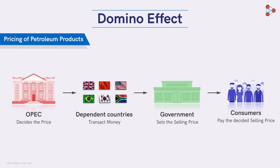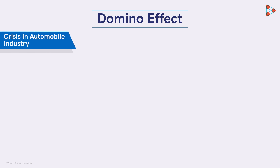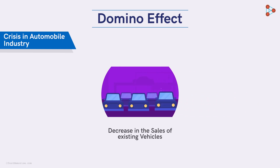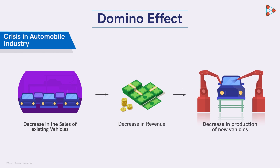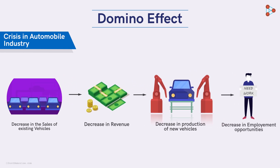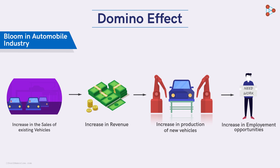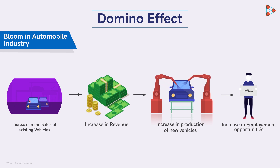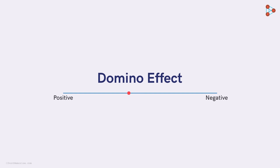Let's consider another example: an automobile industry suffering from a crisis. The decline in the sales of existing vehicles led to a decrease in revenues. As revenues nosedived, it became very difficult for the industry to operate, so the production of new vehicles dropped. Further, the labourers involved in production had to lose their jobs due to the plunge. This signifies the domino effect. On the other hand, if the sales of vehicles soar, employment opportunities will shoot up again. In general, the domino effect can have either a positive or a negative consequence depending on the situation.